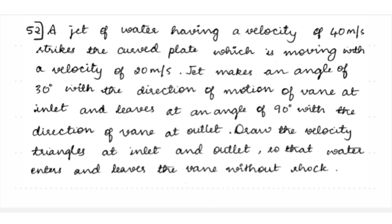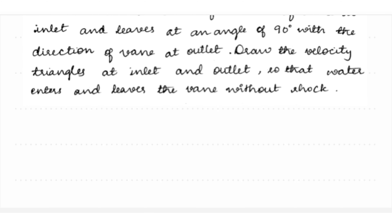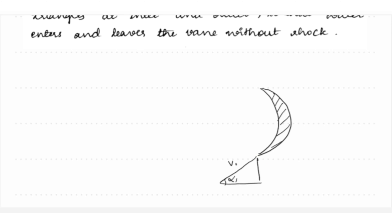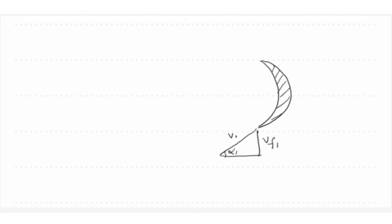We need to draw velocity triangles at inlet and outlet and calculate the vane angles. At inlet, the jet strikes with velocity v1 making an angle alpha 1 with the horizontal. We drop down the vertical component vf1, and draw the relative velocity vr1 making angle beta 1. The horizontal component is vw1, and u1 is the plate velocity.